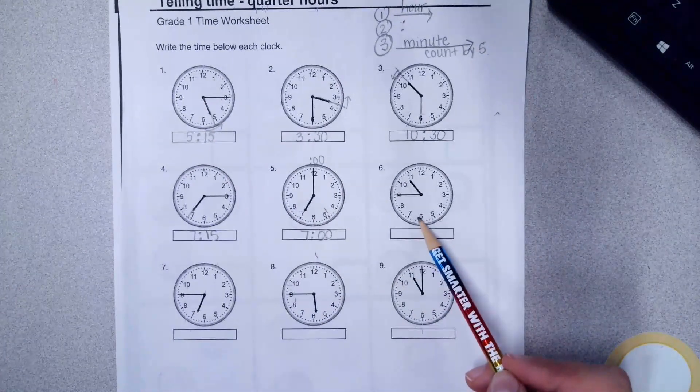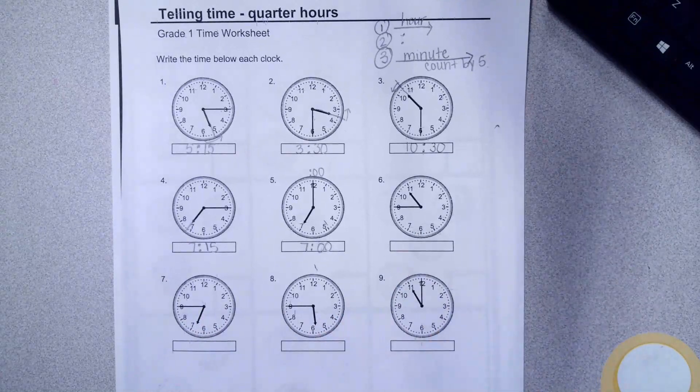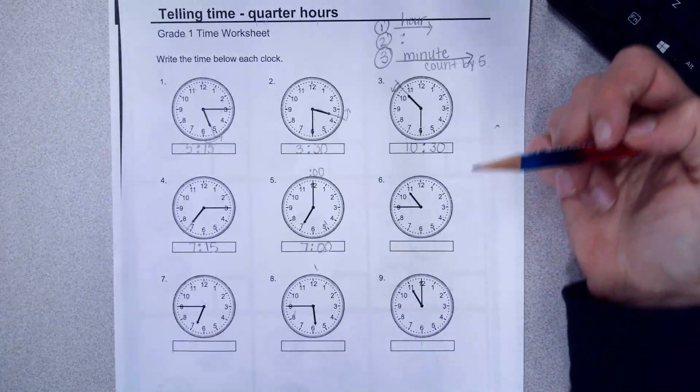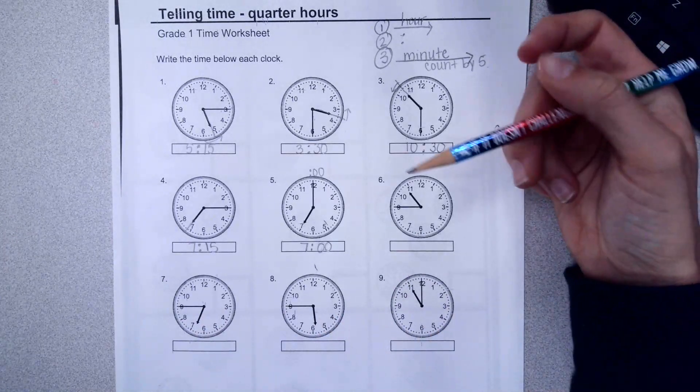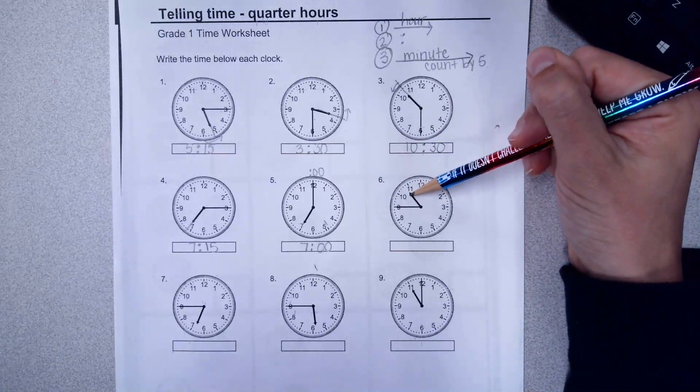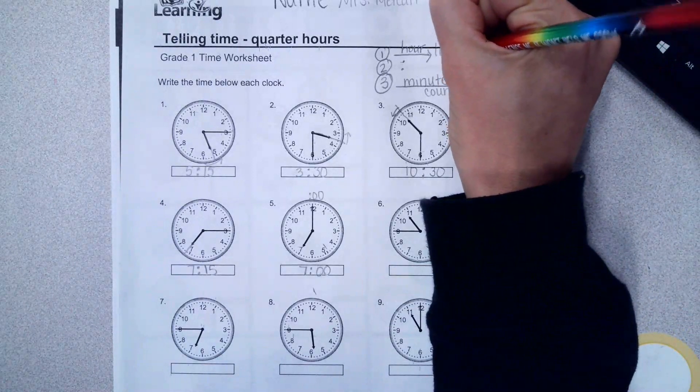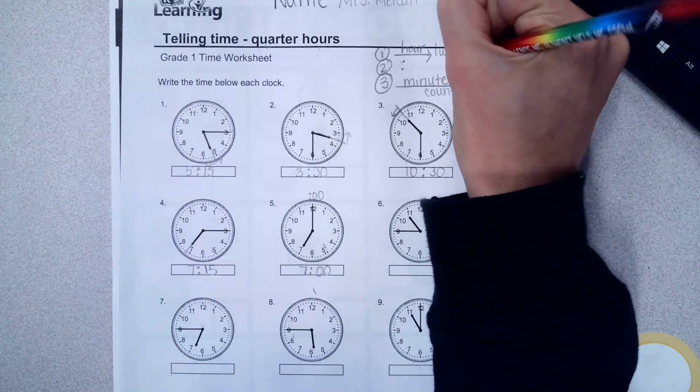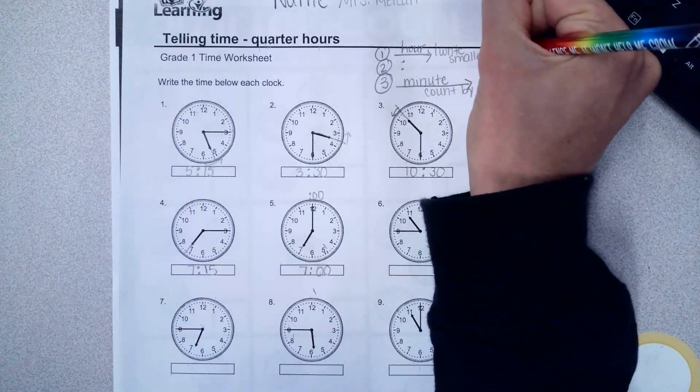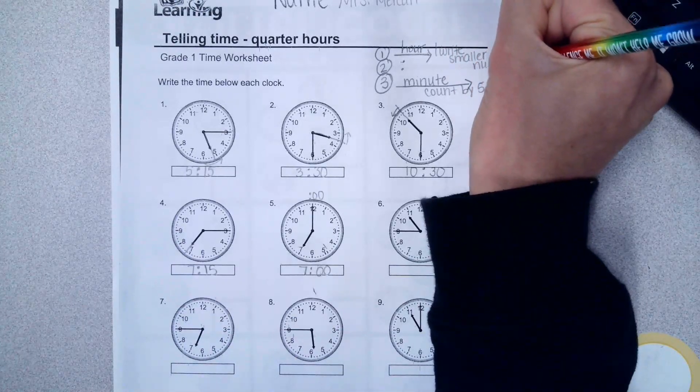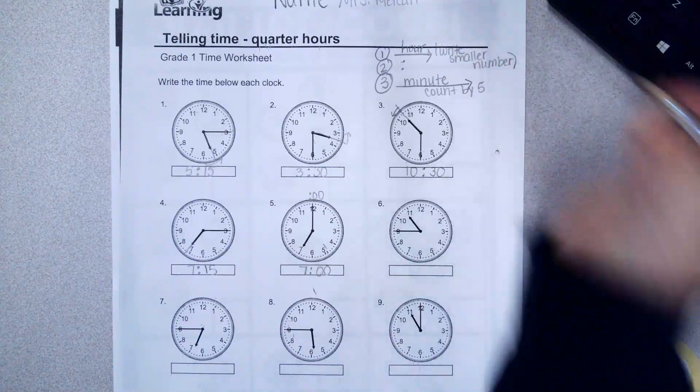All right. Your job now is to do six, seven, eight, and nine by yourself. Once you have that done, you're going to turn it into the tray. Be careful when the hour hand is pointed between two numbers. If it is, remember you write the smaller number. All right. Do your best work. Please be neat.